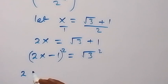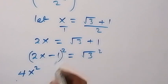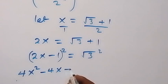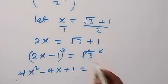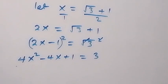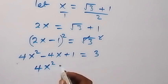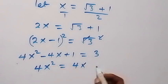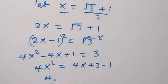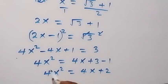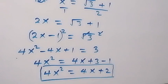Squaring the left side: (2x minus 1) squared gives 4x squared minus 4x plus 1. The right side gives 3. So we have 4x squared equals 4x plus 2. We will be using this result going forward.